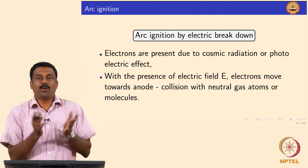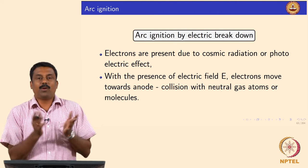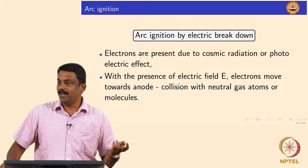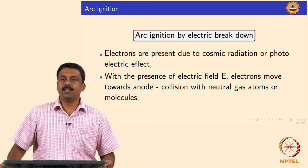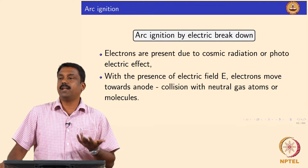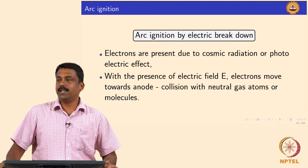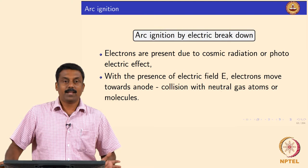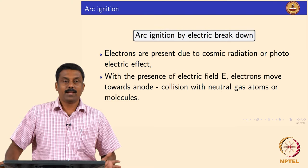If you have electrons in the system from cosmic radiation or the photoelectric effect and you apply an electric field from the power source, the electrons start moving. They travel toward the anode and during this process they also collide with gas atoms. When these electrons — created by cosmic radiation or photoelectric effect — travel toward the anode under the influence of the electric field, they collide with gas atoms and gain energy.